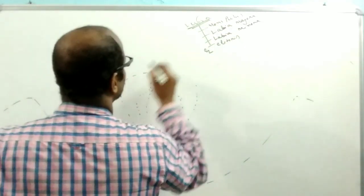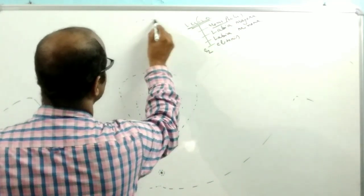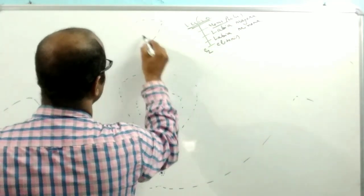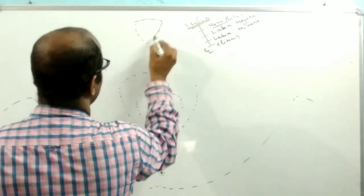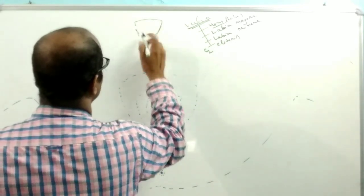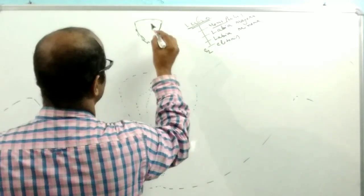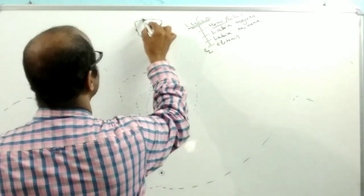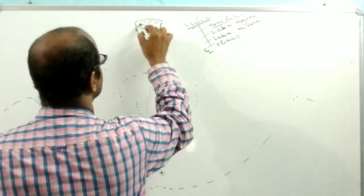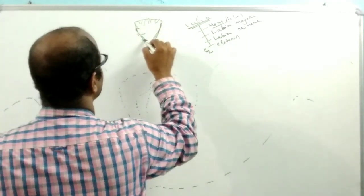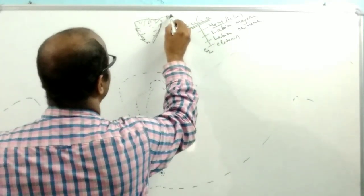Now come to the mons pubis. Mons pubis is actually a triangular shaped structure and provided with adipose tissue. This is a pad-like structure. At the time of puberty, the outer surface is covered by the hair or the pubic hairs.